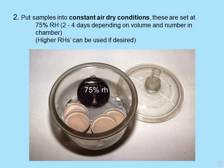Step two: put the samples into constant air dry conditions. The problem normally is if you leave them in the open, the humidity varies enormously. So we want constant air dry conditions, and for convenience these are set at 75% relative humidity. Leave them there for two to four days to come to equilibrium. We can use higher or even lower relative humidities — this is done by changing the salt solution which maintains the humidity in the chamber.